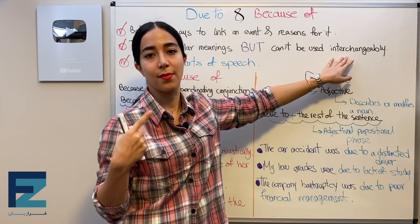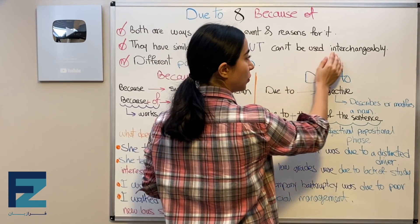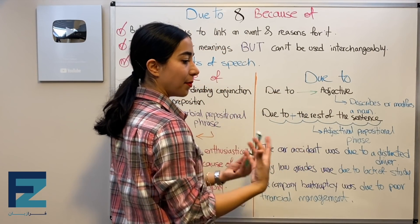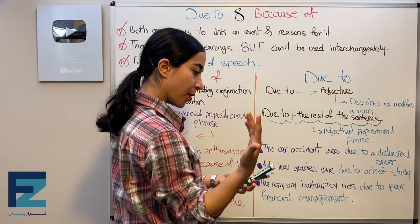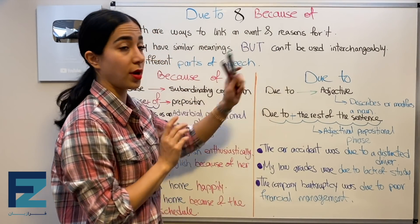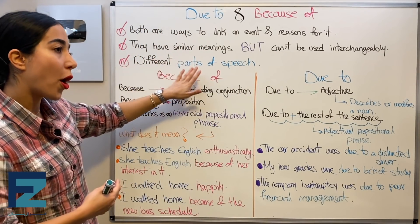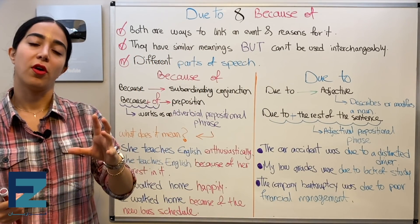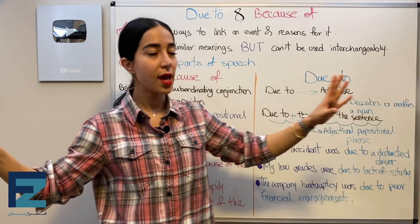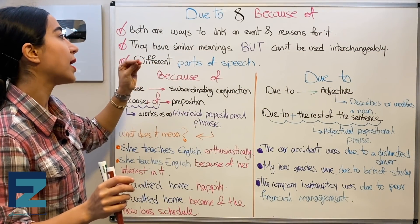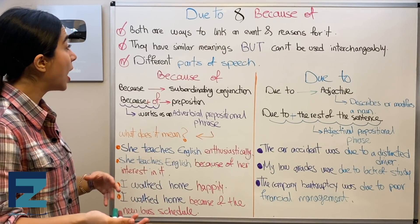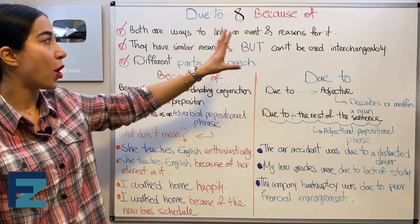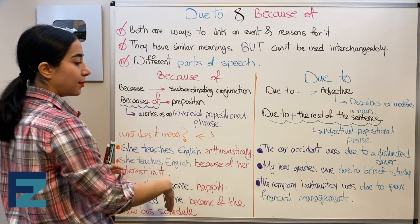They can't be used interchangeably — meaning you can't simply replace 'because of' with 'due to' or vice versa. They also have different parts of speech. So: due to and because of are both ways to link an event and its reasons; similar meanings, but can't be used interchangeably, and different parts of speech.